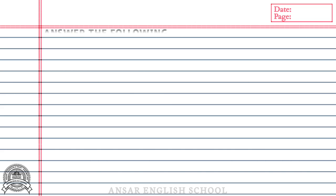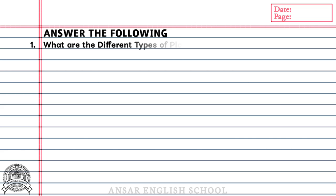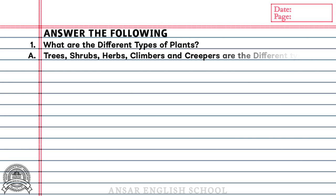Answer the following. Question number 1: What are the different types of plants? Answer: Trees, shrubs, herbs, climbers and creepers are the different types of plants.